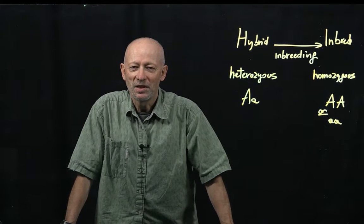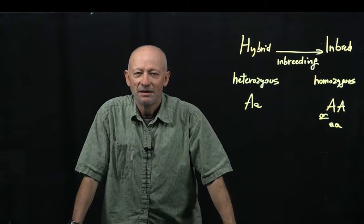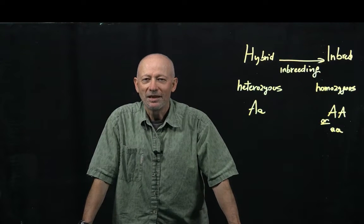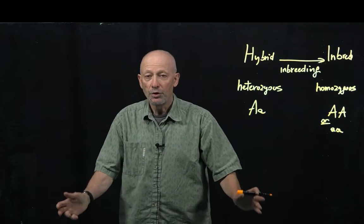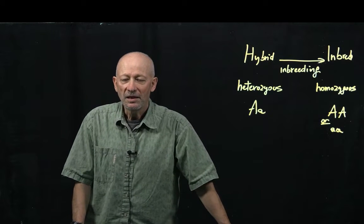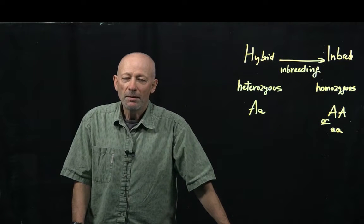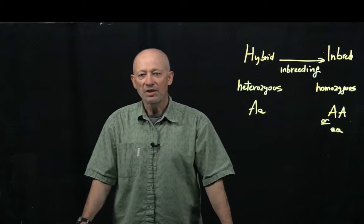Let's define what is involved in inbreeding. Mendel understood that by selfing pea, he carried out inbreeding. Now, you could also do it by mating siblings, or you could do it by mating cousins or individuals that are related in some way.